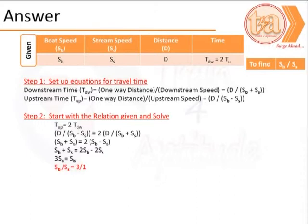The next step is to calculate or frame the equations for the time to move downwards. That is tdw equals distance divided by the relative speed. The last step is to begin with the relation between the times and substitute them by the equations we formed, then solve to find sb by ss. In this case it is 3 by 1.